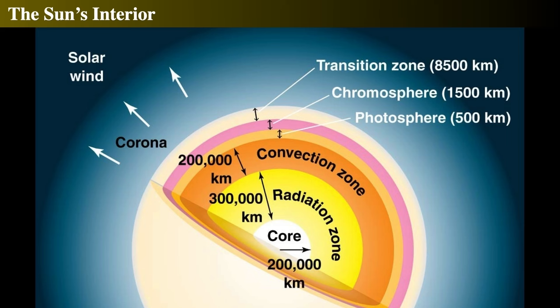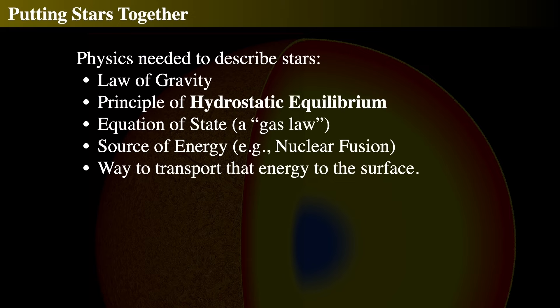The Sun's interior structure is divided up into a series of areas. The photosphere is very thin with respect to the Sun's thickness. Directly below the photosphere is what we call the convection zone — extraordinarily deep, about 200,000 kilometers. Below that is the radiation zone, which has nothing to do with radioactivity; it is where energy is transported via radiation, about 300,000 kilometers. The core itself has a radius of about 200,000 kilometers.